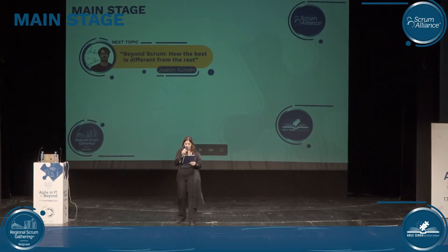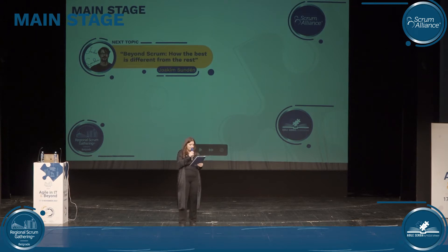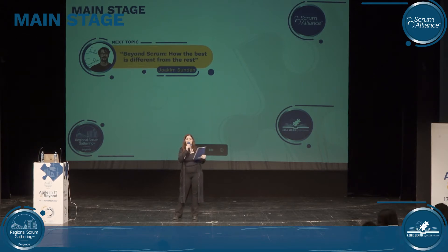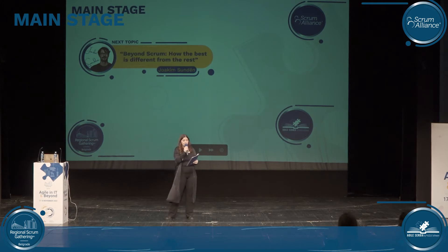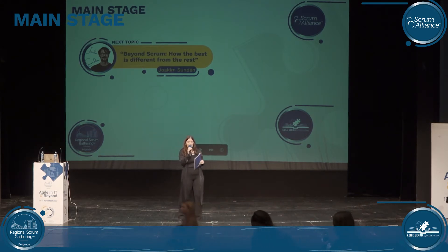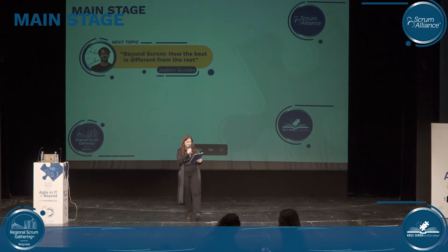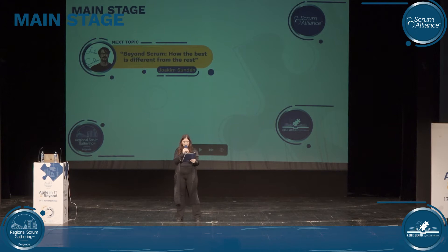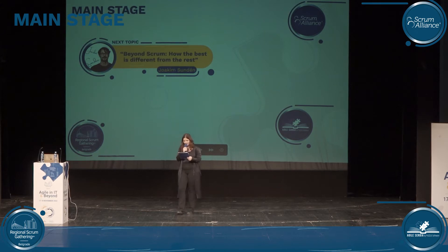Our next speaker is Joachim Sundin. He is a consultant and agile coach who worked with half a dozen different leadership management teams and delivery teams. He frequently speaks and trains on topics such as agile at scale, Spotify, empowered product teams and organization, agile leadership and strategy. He is also the co-author of Kanban in Action. His talk is 'Beyond Scrum: How the Best is Different from the Rest.' Welcome to the stage, Joachim Sundin.